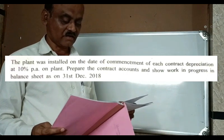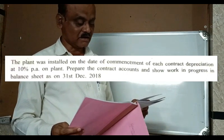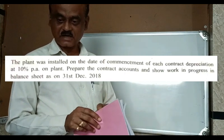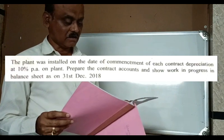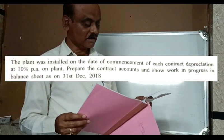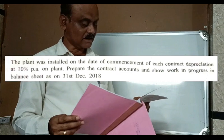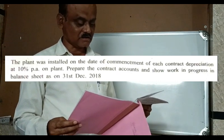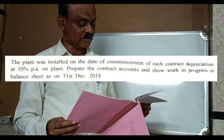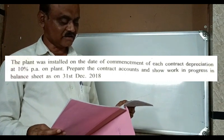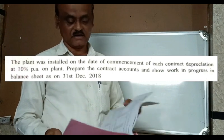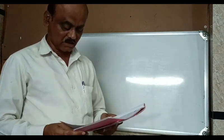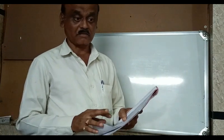The plant was installed on the date of commencement of each contract. Depreciation on plant is at 10% per annum. Prepare the contract account and show working progress in the balance sheet as on 31st December 2018.